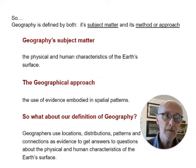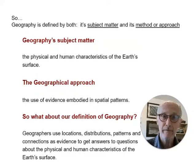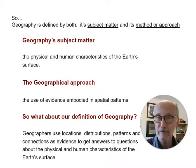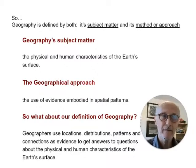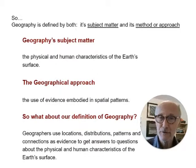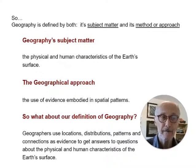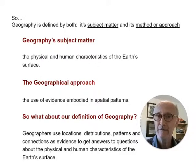Geography is defined both by its subject matter and by its method or approach. You can't define it just by one of those, because it will share subject matter with another discipline. Other disciplines look at the same subject matter that geography looks at. It's only when you consider the method or approach that geographers use that geography becomes really distinctive. So geography's subject matter is the physical and human characteristics of the Earth's surface, and the geographical approach uses evidence embodied in spatial patterns and distributions.